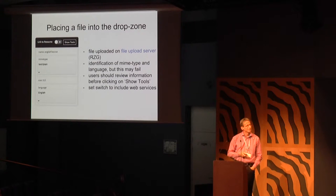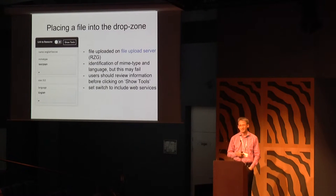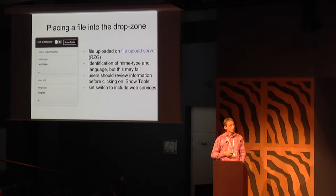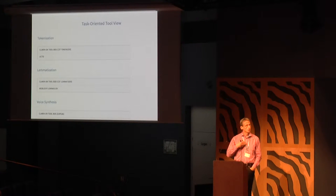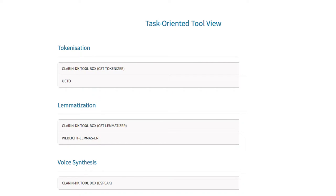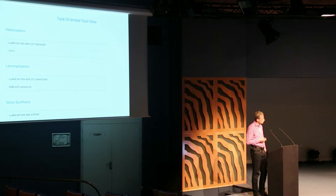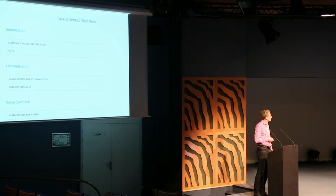There's a little switch and a button to show tools. If you activate the switch, the button changes to show tools and web services, because we recently included web services in our tool registry. Once you click show tools, the browser shows you a list of all tools that could process your resource. It's a task-oriented view — tasks like tokenization, lemmatization, voice synthesis — and we currently have about a dozen tasks registered with the switchboard.